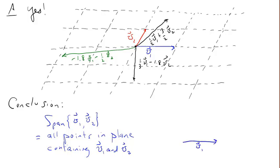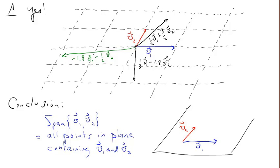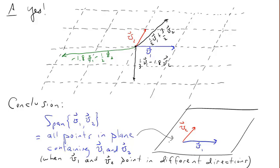Here's a simpler drawing of this case: we draw vector V1, vector V2, and just draw the outline of a plane around them. This plane represents the span of V1 and V2. Note that this is the case when V1 and V2 point in different directions.